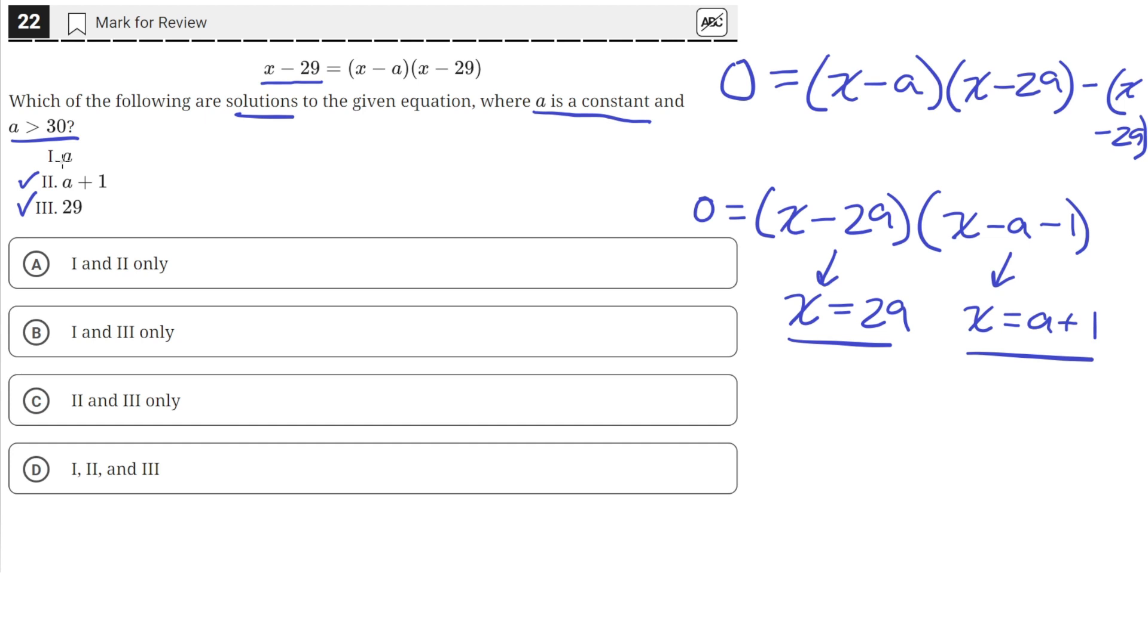The first choice here, a, is incorrect. Because a minus 29 does not equal 0 and a minus a minus 1 just equals negative 1. So that's not 0 either, so that wouldn't satisfy the equation. So this one is incorrect.